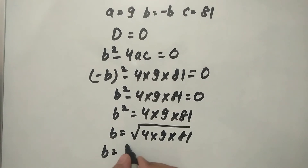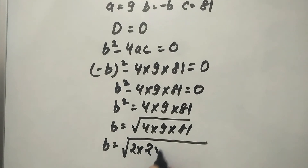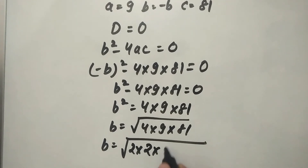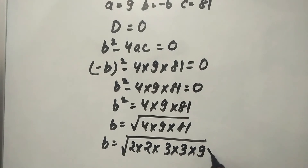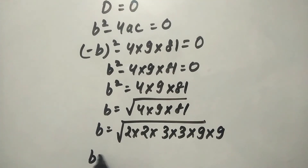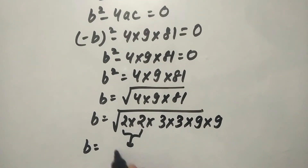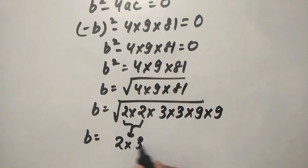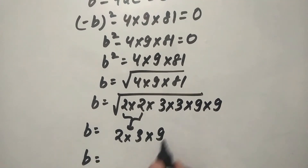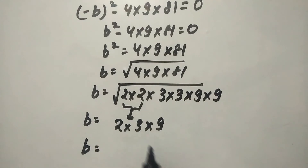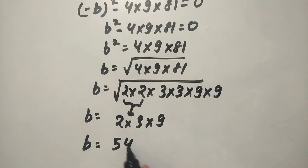We can write this as √(2 × 2 × 3 × 3 × 9 × 9). Taking the square root, we get 2 × 3 × 9, so b = 6 × 9 = 54.